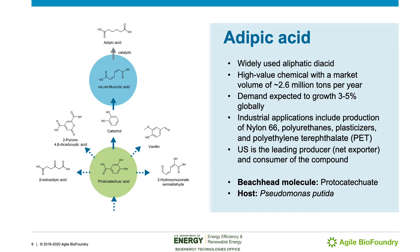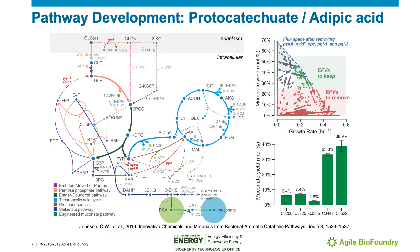The beachhead associated with muconic acid is protocatechuate, and the host for production is the soil bacterium Pseudomonas putida. To engineer Pseudomonas putida to produce muconic acid from glucose, a pathway originally demonstrated in E. coli by Karen Draths and John Frost was introduced to pull carbon from the shikimate pathway for aromatic amino acid biosynthesis to muconic acid through the protocatechuate beachhead.